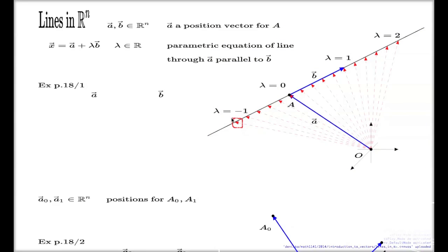That's all there is to the concept of the parametric equation of the line. You just have this experience with three dimensions and you extrapolate it to N dimensions, and you call this identity the parametric equation of the line, or simply the line, because you can't picture this in N dimensions. The simple example is from page 18 in my notes.